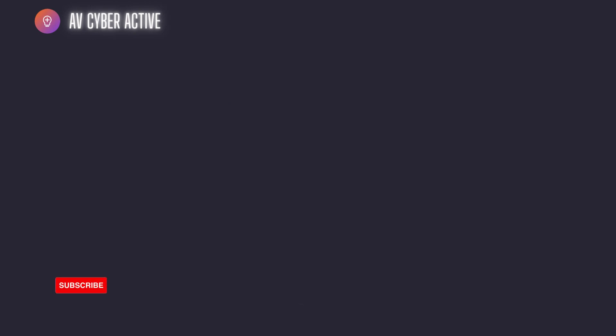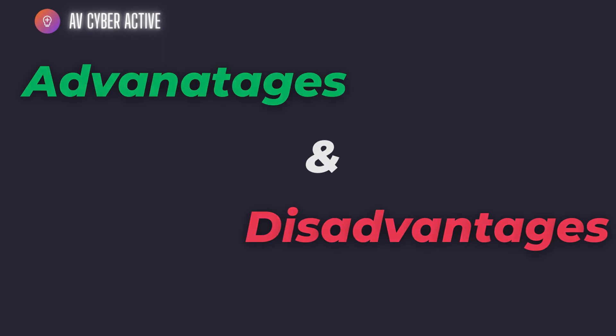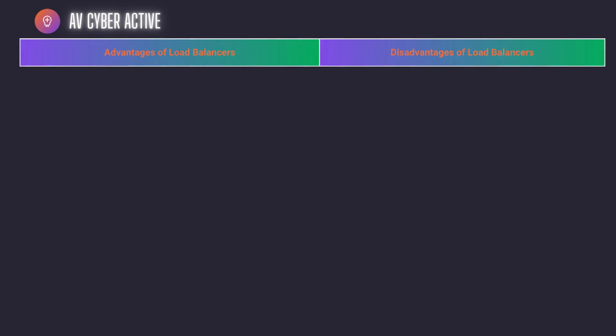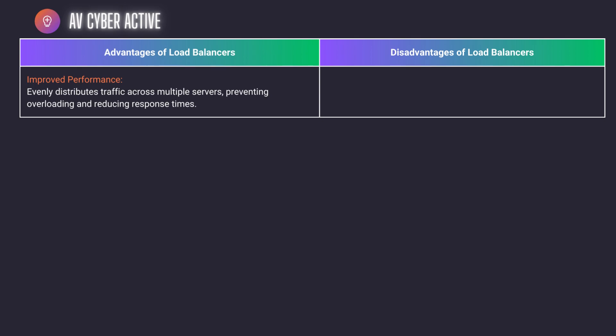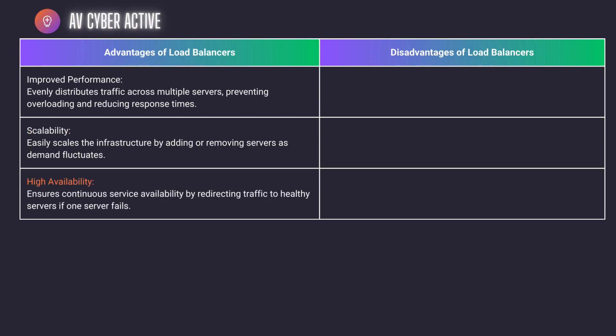Since a new device has been introduced in the network, it will have its advantages and disadvantages. The first advantage is improved performance — it evenly distributes traffic across multiple servers, preventing overload and reducing response times. The second advantage is scalability — it easily scales the infrastructure by adding or removing servers as demand fluctuates. If additional servers are introduced, the load balancer, if configured correctly, will have no problems distributing traffic across all the servers. The third advantage is high availability — it ensures continuous service availability by redirecting traffic to healthy servers if one of the servers fails.